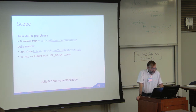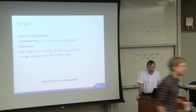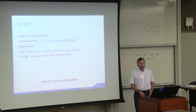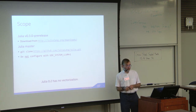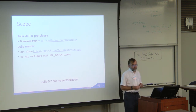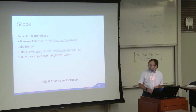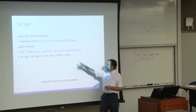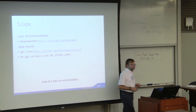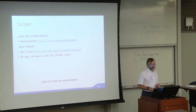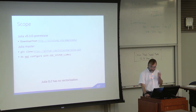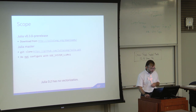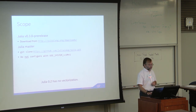The scope of this talk is the Julia 0.3 pre-release or the Julia master. None of it applies to Julia 0.2 — there's no vectorizer in Julia 0.2. It also does not apply if you use the system LLVM; there's a bug issue. So you have to download the nightly or build it yourself. The vectorization option is on by default.